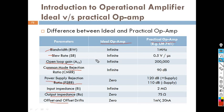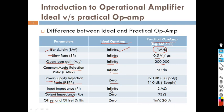Bandwidth in the ideal operational amplifier is infinite, but practically — taking the 741 as our example — it works for only one megahertz. Slew rate is infinite ideally, but practically it is 0.5 volts per microsecond. Open loop gain is infinite ideally. Input impedance for the ideal operational amplifier is infinite, but practically for the 741 it is 2 megaohms.